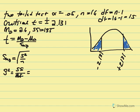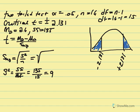With variance equal to 9, we calculate the estimated standard error of the mean difference: the square root of 9 over 16. Taking the square root of 9 divided by 16 gives us 0.75. This is a small estimated standard error — normally the smaller the variability, the higher the t value.